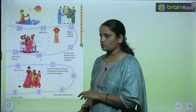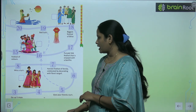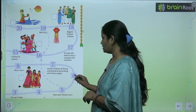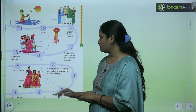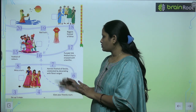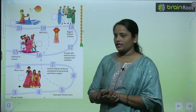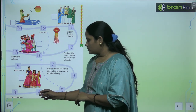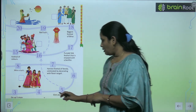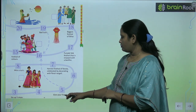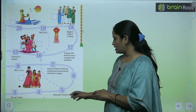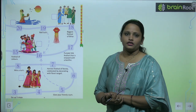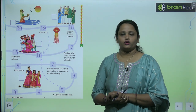After two comes three. Agar three pe jayega, he has to go five steps aage — one, two, three, four, five. Harvest festival of Kerala ka naam batana hai. Agar five pe aaya, he has to give your friend a turn — friend ko turn dena padega.